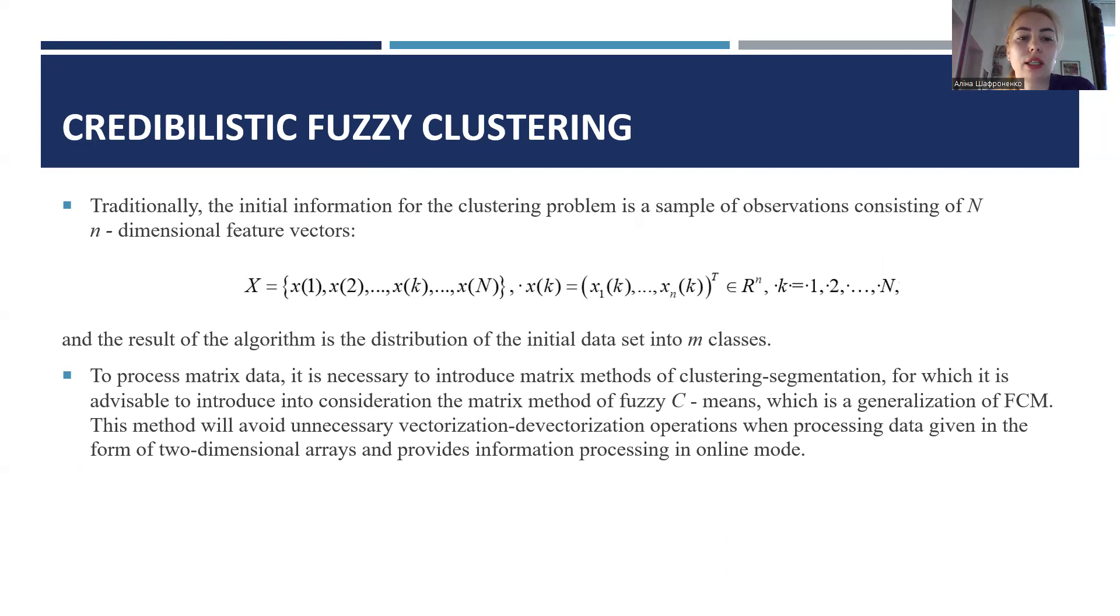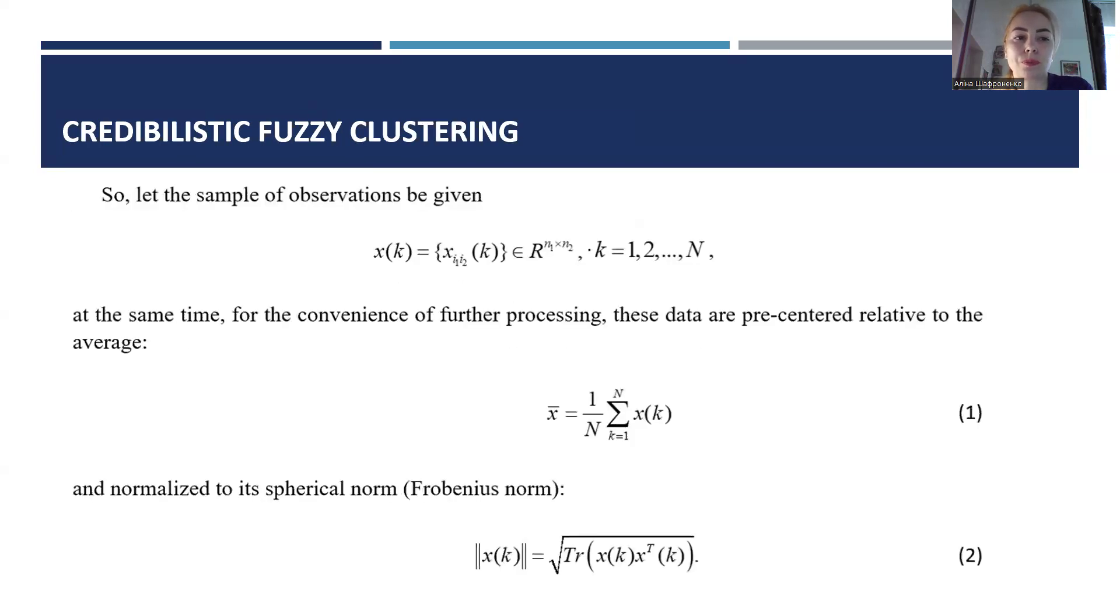To process matrix data, it is necessary to introduce matrix methods of clustering-segmentation, for which it is advisable to introduce into consideration the matrix method of fuzzy C-means, which is a generalization of FCM. This method will avoid unnecessary vectorization operations when processing data given in the form of two-dimensional arrays and provides information processing in online mode.